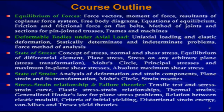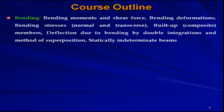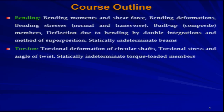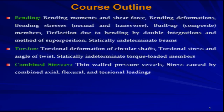Next is stress-strain relationship and failure theories, which includes tensile test and stress-strain curve, elastic strain relationships, thermal strains, generalized Hooke's law for plane stress problems, relation between elastic moduli, criteria of initial yielding, distortional strain energy, von Mises and Tresca yield theories. Next is bending: bending moments and shear force, bending deformations, bending stresses — normal as well as transverse — built-up composite members, deflection due to bending by double integration and method of superposition, and statically indeterminate beams. Next is torsion, covering torsional deformation of circular shafts only — rectangular or other shaft shapes will not be considered — torsional stress and angle of twist, and statically indeterminate torque-loaded members.